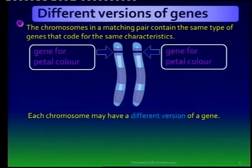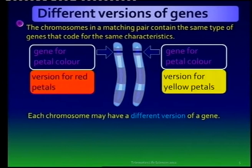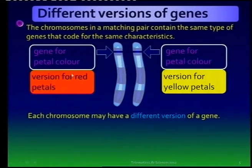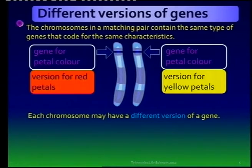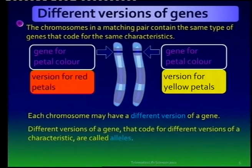When we have different versions of a gene, we talk about different alleles. For instance, there is a gene that codes for the color of petals — one allele codes for red petals, and this gene lies on exactly the same locus of a homologous pair. The other allele also codes for the color of petals but in this instance it's yellow. These different versions of a gene are referred to as alleles.